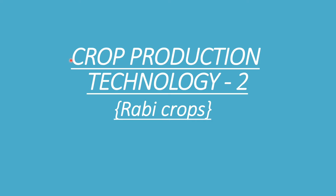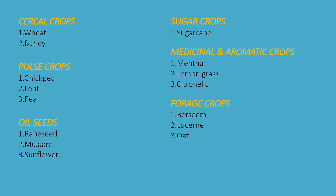Hi viewers, this is Avinash Agriwal. In this tutorial, we mainly discuss the crop production technology for Rabi crops. In this video, we cover cereal crops like wheat and barley; pulse crops like chickpea, lentil, and pea; oil seed crops like rapeseed, mustard, and sunflower; sugar crops like sugarcane; medicinal and aromatic crops like mentha, lemongrass, and citronella; and forage crops like bersim, lucerne, and oat.